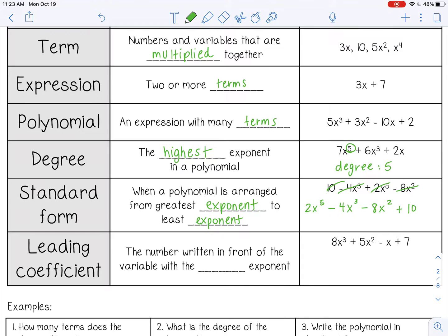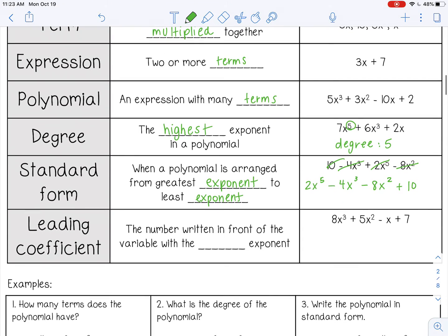Leading coefficient is the number written in front of the variable with the highest exponent when it's in standard form. So you may want to make a note, it has to be in standard form. So this polynomial is in standard form. The leading coefficient would be 8.